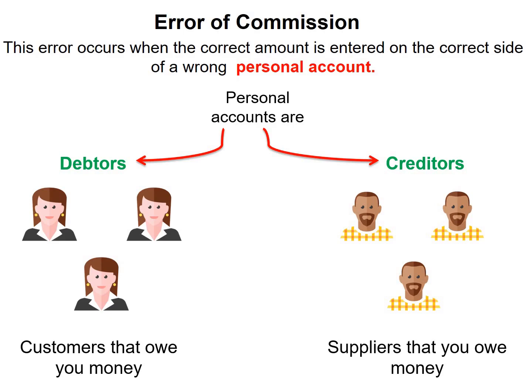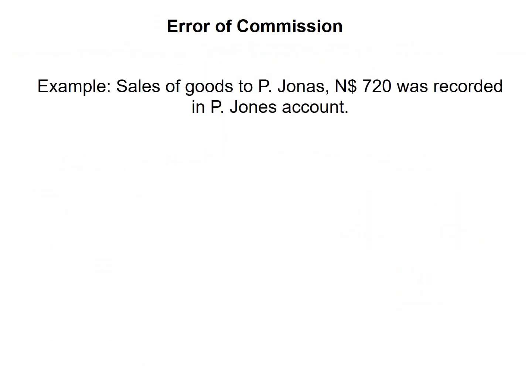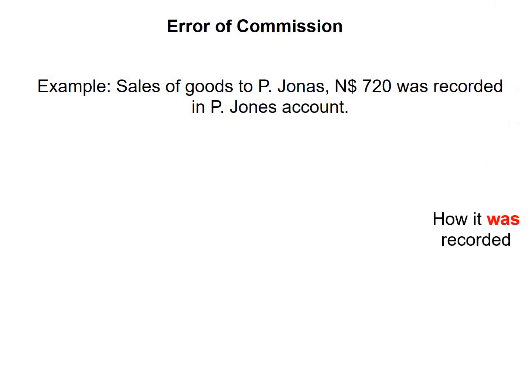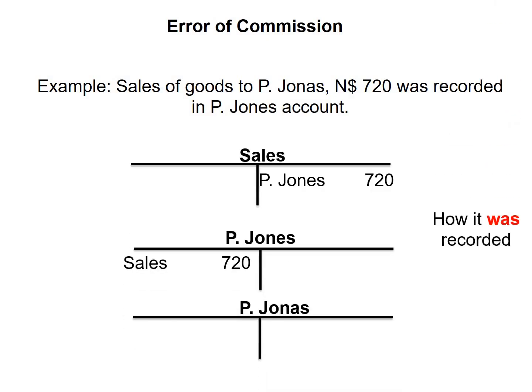Let's have a look at our example. A sale of goods to P. Jonas for $720 was recorded in the account of P. Jones. Sales was credited, which is fine, but then the account of P. Jones was debited instead of the account of P. Jonas.